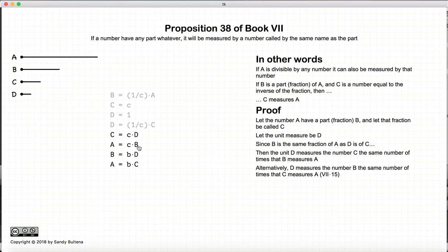But if we have these two conditions, using Proposition 15 of this book, D will measure B the same number of times that C measures A. So here we have B measures D the same number of times that C measures A.